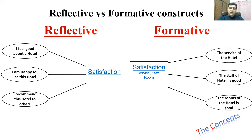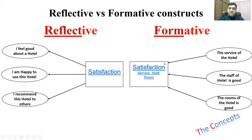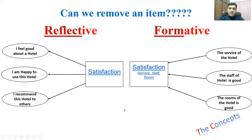Now suppose service, staff, and room are three important elements of customer satisfaction at a hotel. 'The service was good,' 'the staff of the hotel was good,' and 'the room of the hotel was good' are three items. If we take one of these elements out, it will lead to mis-measurement. So we cannot remove an item from formative constructs — removing an item from reflective is fine, but removing from formative leads to mis-measurement.